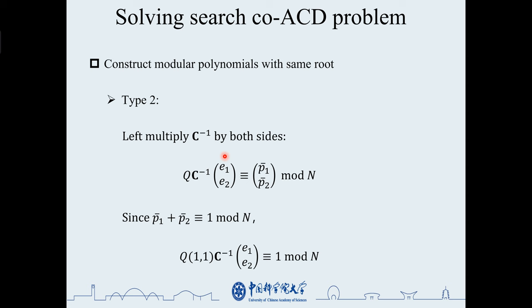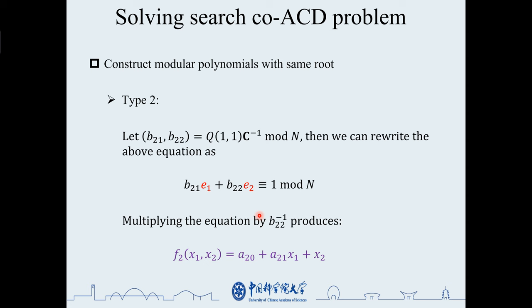Then we multiply an all-one vector on the left so that the sum of pi bar is calculated on the right as 1. We denote the new coefficients by b21 and b22. Then we can obtain the modular equation with two variables, e1 and e2. This gives us the second class modular polynomials, f2.